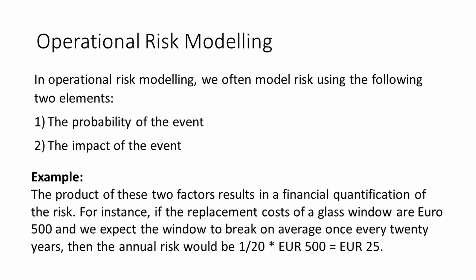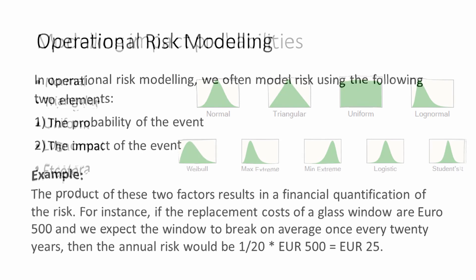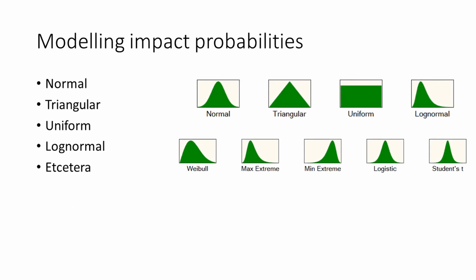Of course, the event and impact probabilities are estimated average values surrounded by uncertainty. In our probabilistic models, we could define the impact as a log-normal, uniform, or triangular distribution. The event frequency we could model with a Poisson distribution.